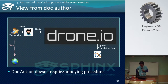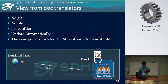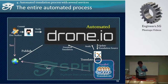In summary, let's look at the result of the automation from the point of view of author and translators. From the doc author's perspective: when the author pushes to the repository, the translation source on Transifex will be updated, and the author can check the translated HTML on the site — no annoying procedures required. From the doc translator's perspective: they can translate the document in parallel with no git, no files, no conflicts. Translation source updates automatically, and they can get translated HTML output without manual builds. Translation contributors can focus on translation. By this automation mechanism, both doc authors and translators will achieve maximum effect with minimum effort.